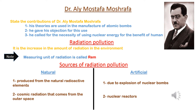Radiation pollution increases the amount of radiation in the environment. Sources of radiation pollution include natural sources and artificial sources. Natural sources are represented by natural radioactive materials found on the earth's surface and cosmic radiation that comes from outer space. Artificial sources include the explosion of nuclear bombs and nuclear reactors.